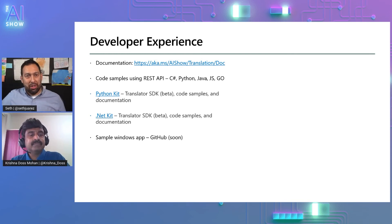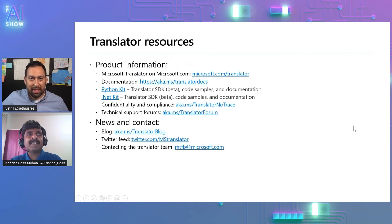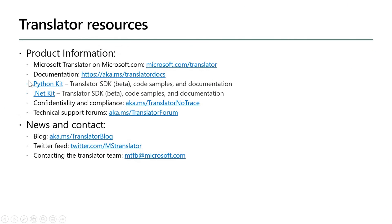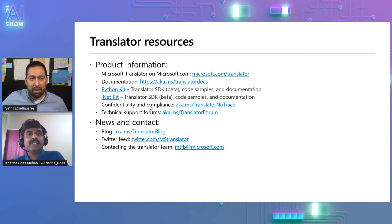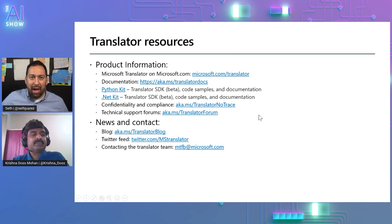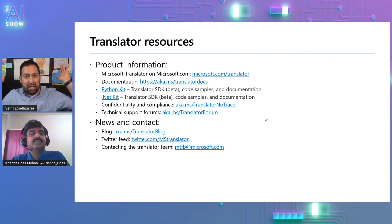Where can people go to find out more? There it is — it's a huge list. The documentation for all Translator offerings is available here. We have text translation, document translation, how to build a custom translator, all over here. We have the Python and .NET kits. And the great thing is we don't persist any of the customer data used for translation. We have a stringent requirement — Translator follows a no-trace policy. You can find more details here.